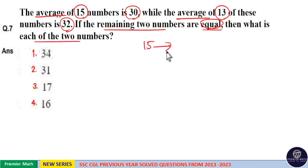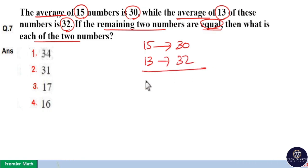Here average of 15 numbers is 30, and out of this 15, 13 numbers average is 32. Now we have to find the remaining two numbers. From this data, we can find the average of two numbers.